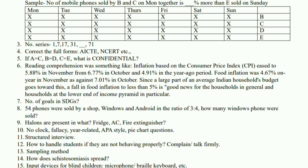Then there was one question on the number series, one question on the full forms of these educational institutions or similar. And there was one question of inputting the values of these words — if A is equal to C and B is equal to D, then what is confidential?